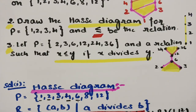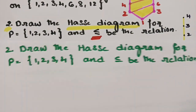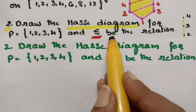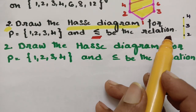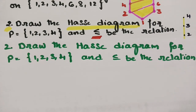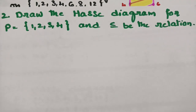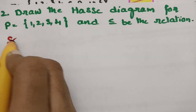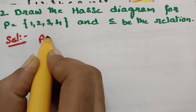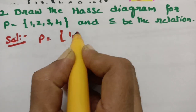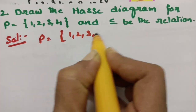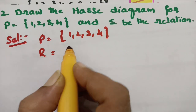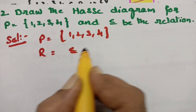The second question: draw a Hasse diagram for P = {1, 2, 3, 4} and less than or equal to as the relation. So we have to take less than or equal to. P is given as {1, 2, 3, 4}, and the relation is less than or equal to.